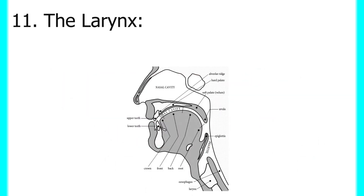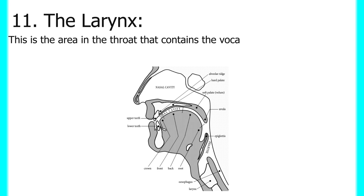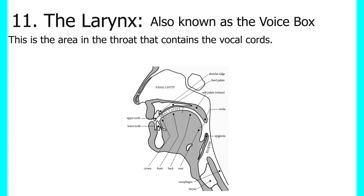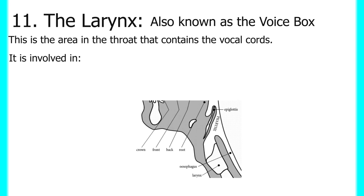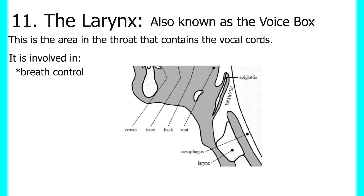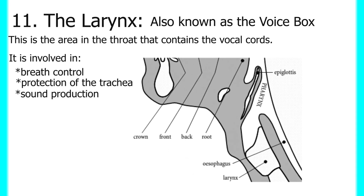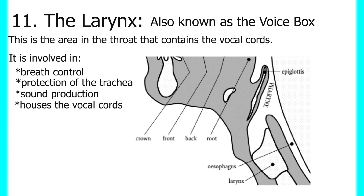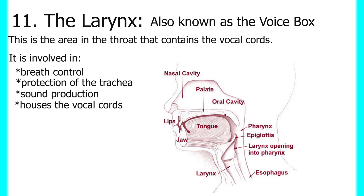Next we have the larynx. The larynx is the area in the throat that contains the vocal cords. It is also called the voice box. It is an organ involved in breath control, protection of the trachea, and sound production. It houses the vocal cords and is involved in swallowing, breathing, and voice production.